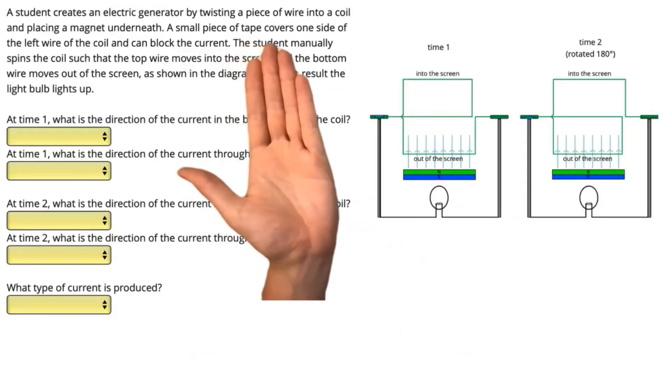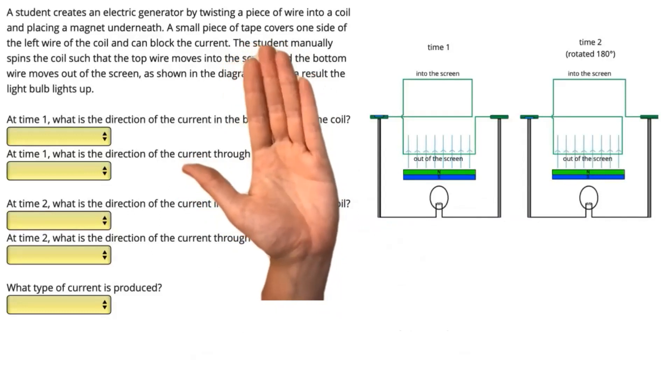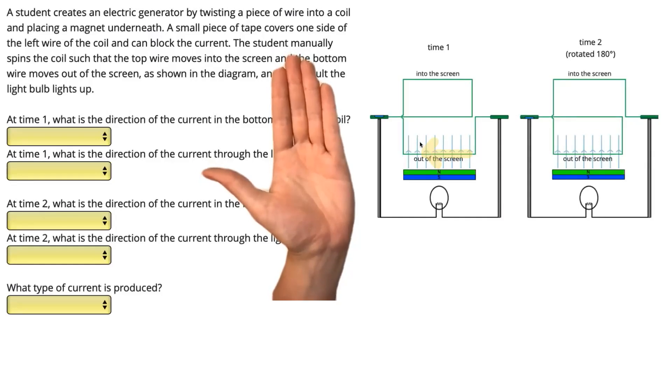To find the direction of the current through the wire here, I'm using the left-hand rule for generators. My fingers represent the direction of the field, which is going upwards on that bottom part of the wire. My palm represents the direction of the force, or in other words, the way the wire is moving. It tells me the wire at the bottom is moving out of the screen towards you, so that's why my palm is facing out of the screen towards you. The thumb then represents the direction of the current.